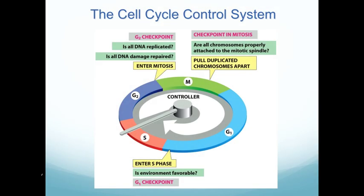The entire cell cycle is controlled by a general overall mechanism that we call the cell cycle control system. This is not just one single step — it's a compilation of many different steps that happen throughout the cell cycle to control progression through it.